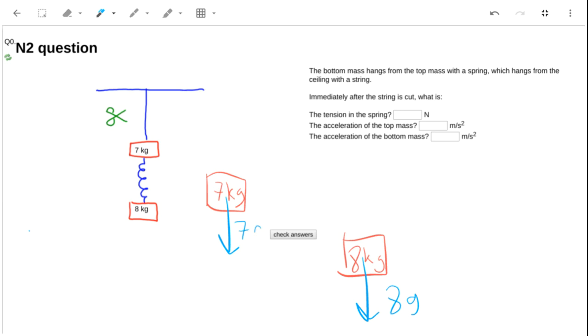Now that 8g is going to be opposed by a tension force in the spring of 8g, and it would also pull down on the seven kilogram with similar force. The string will provide 15g to counteract the seven and the eight.